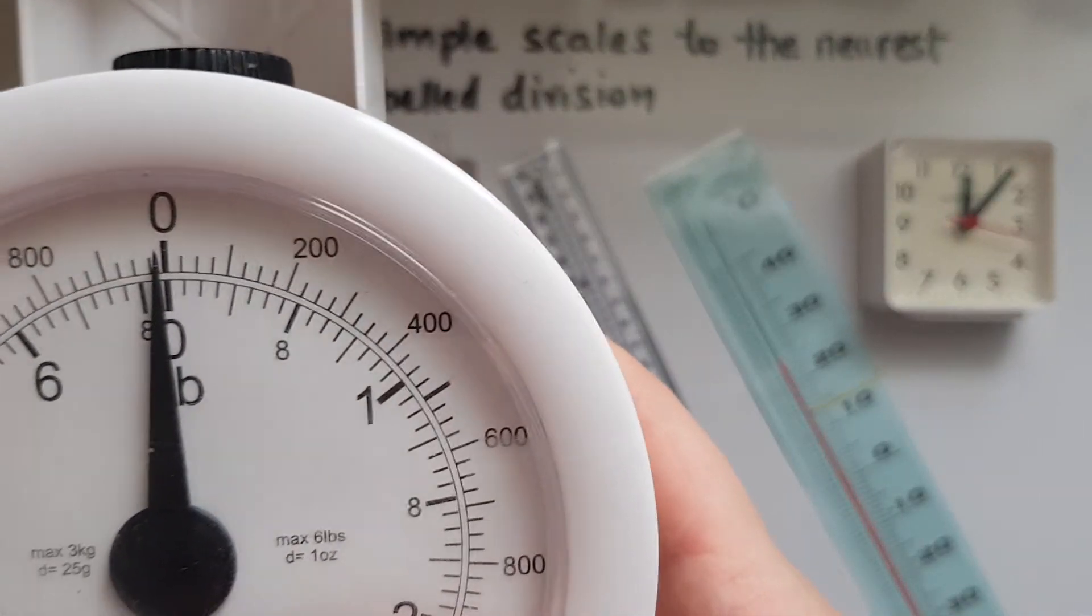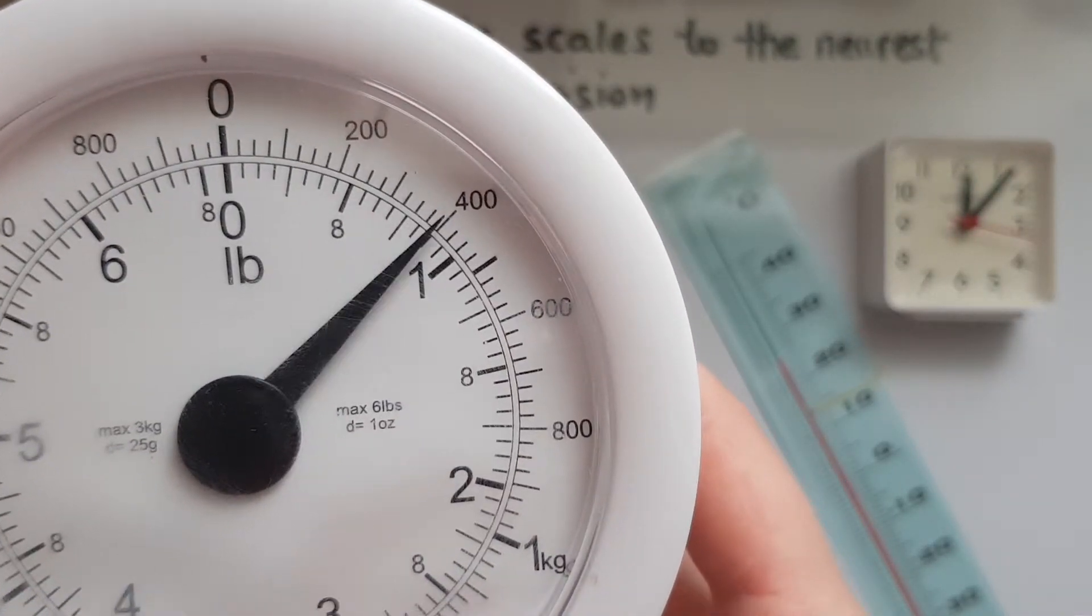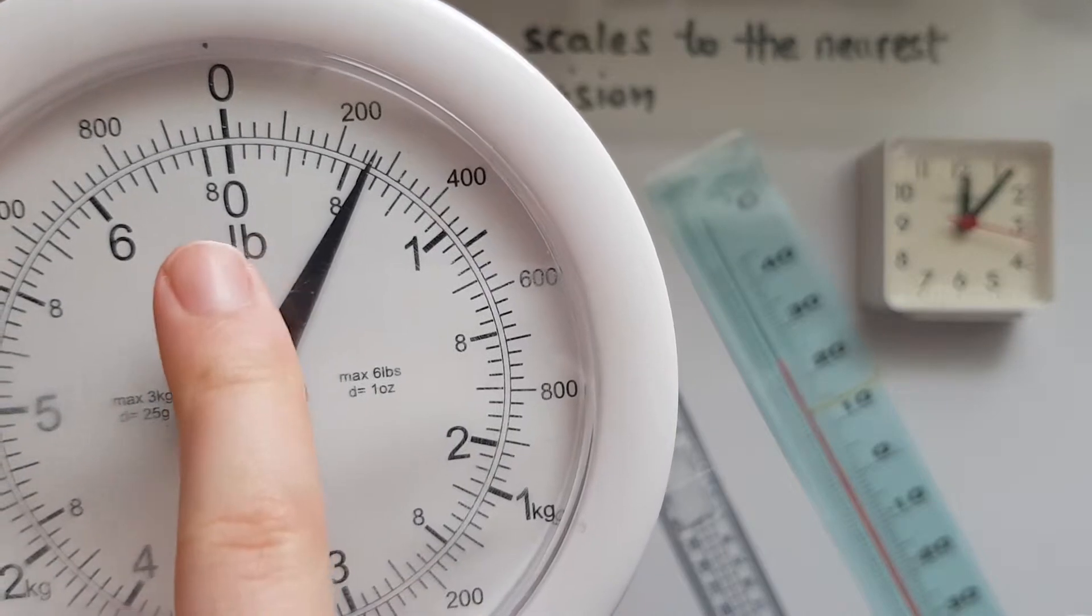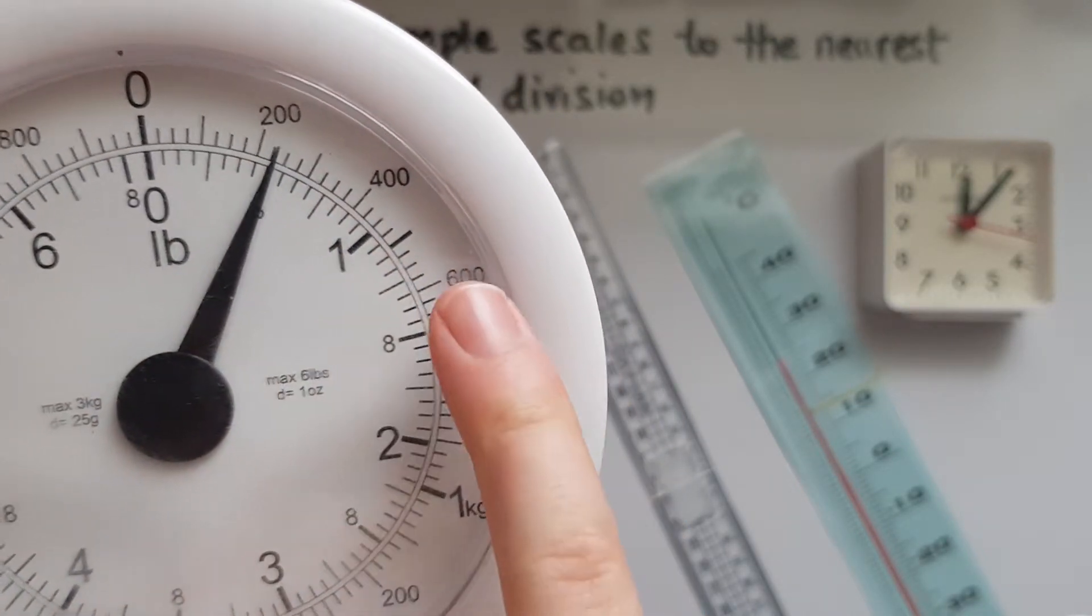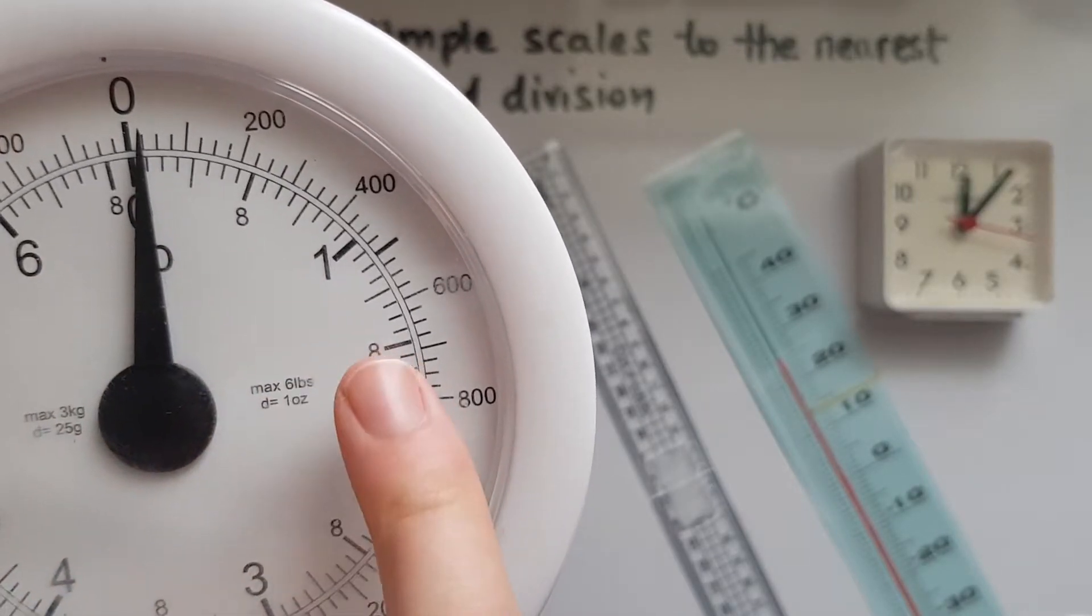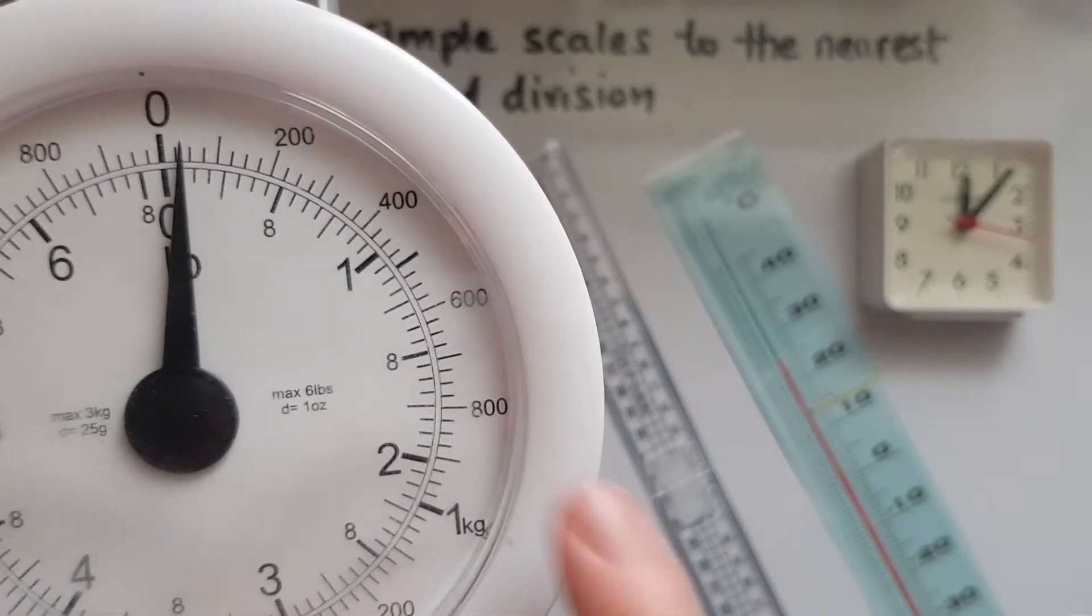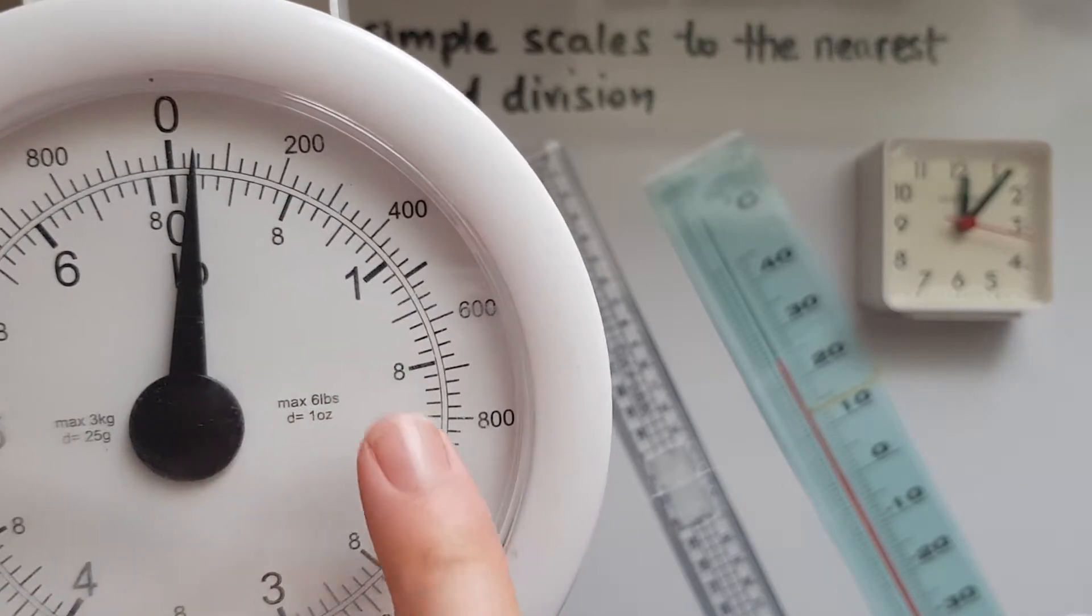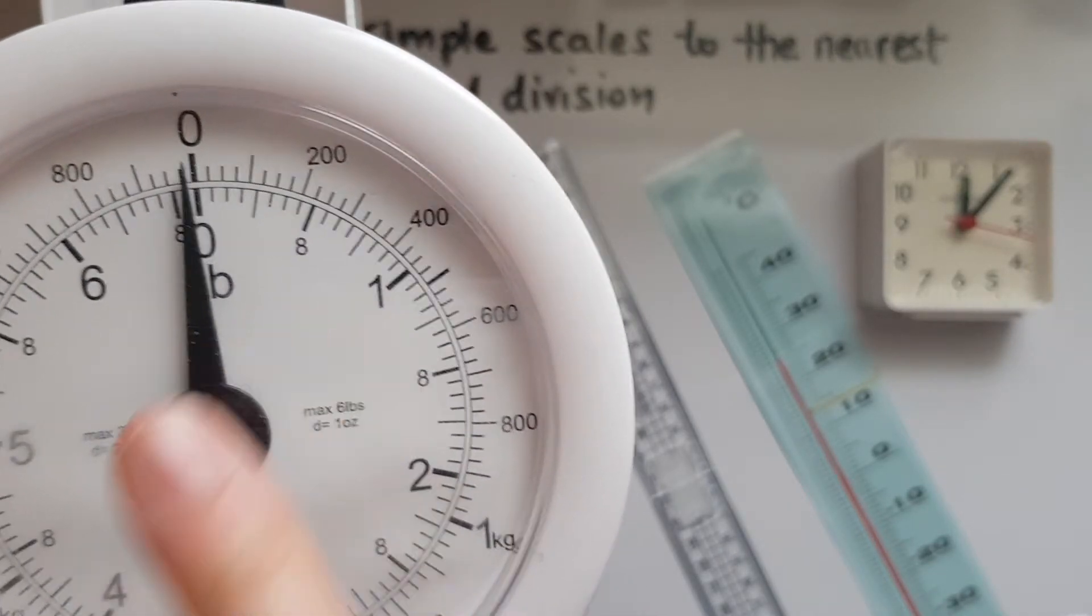What is an unlabeled division? 0 and 200, 400, 600, 800, and so on. 0, 8, 1, 8, 2. These are the labeled divisions because we can see numbers next to them. They've been labeled.